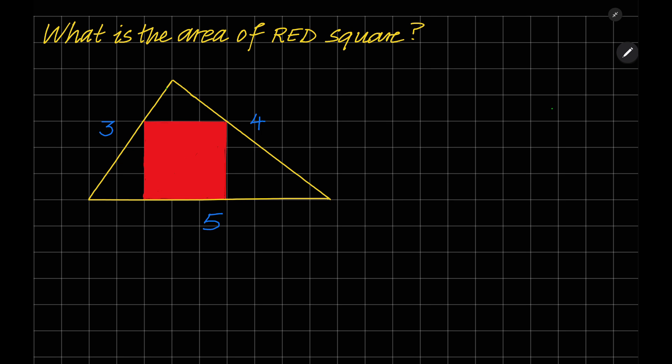Hello everyone. What is the area of the red square as shown in the figure? As you can see, the red square is inscribed in a triangle with side lengths of 3, 4, and 5.